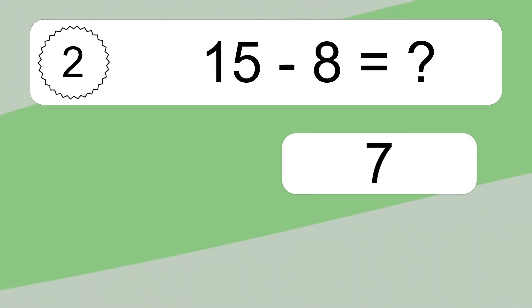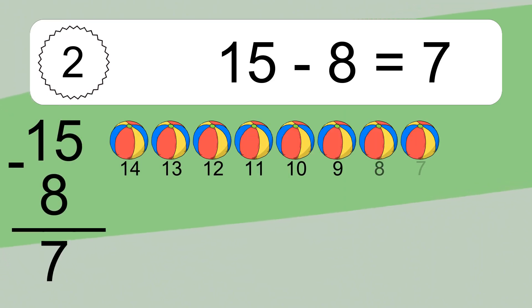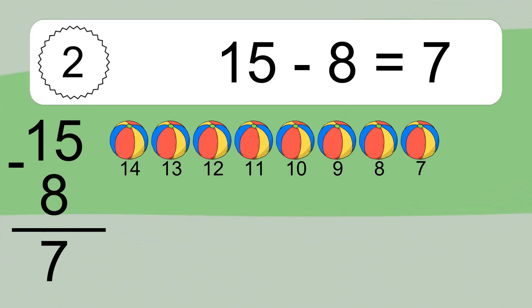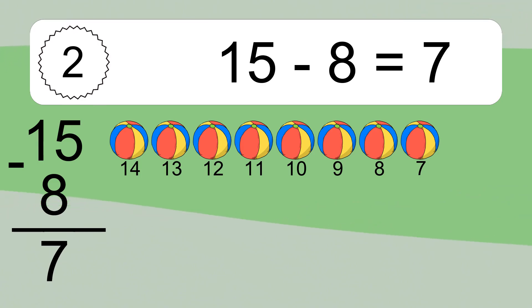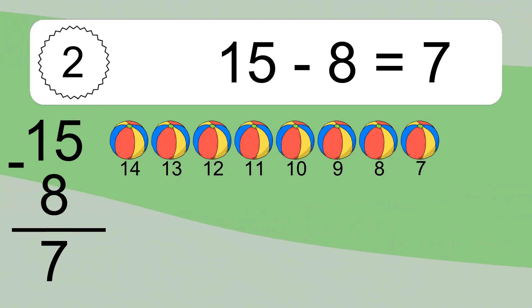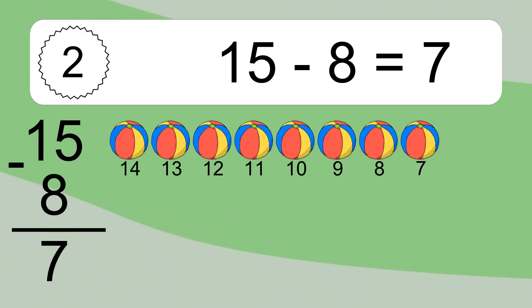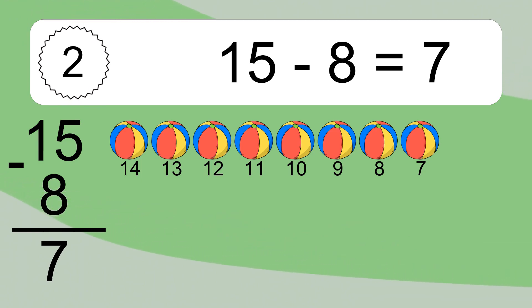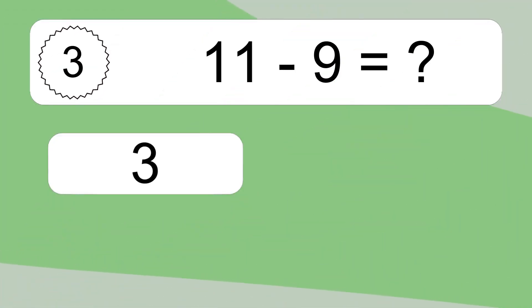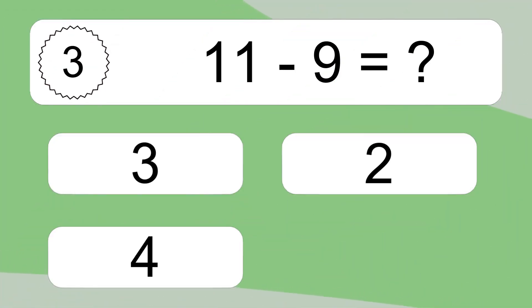15 minus 8 equals what? 15 minus 8 equals 7. Let's count it: 14, 13, 12, 11, 10, 9, 8, 7.